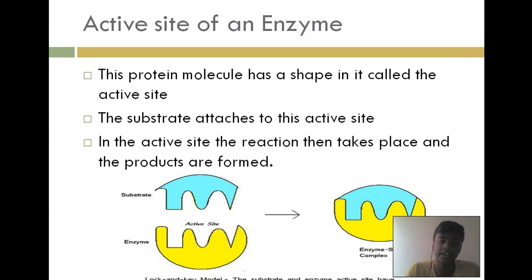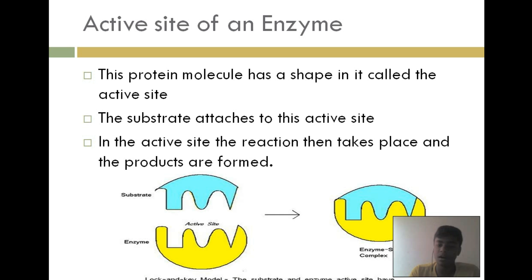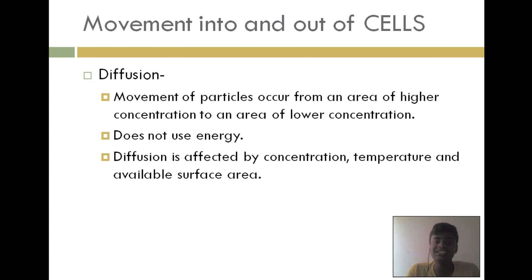This protein molecule has a shape called the active site. The substrate attaches to this active site, and the reaction then takes place and products are formed. Looking at the diagram, the substrate is the blue shape, the enzyme is the yellow shape, and the active site is the region where the substrate attaches. When they come together it forms the enzyme-substrate complex, and the reaction takes place producing products.